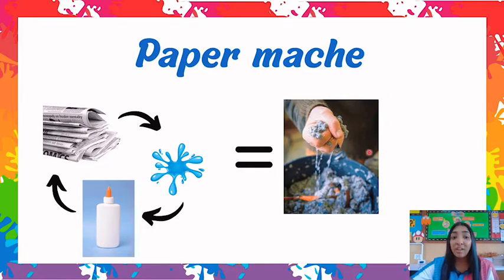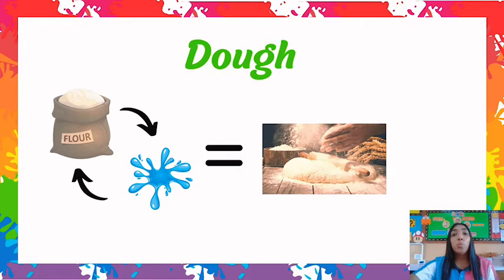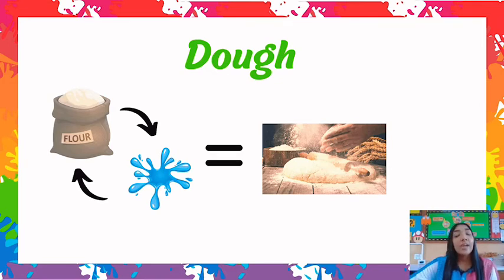The next example of mixing materials is dough. If you mix flour with water you can make dough. We use dough for pizza bases, to make bread, and to make buns. You can make dough from flour and water.